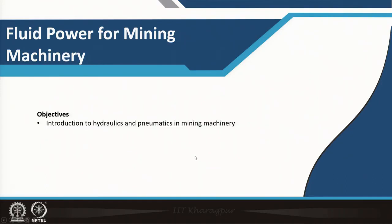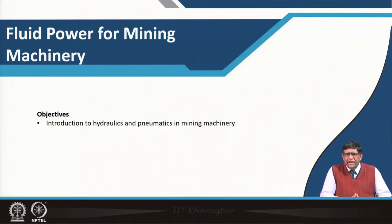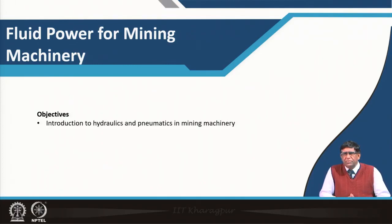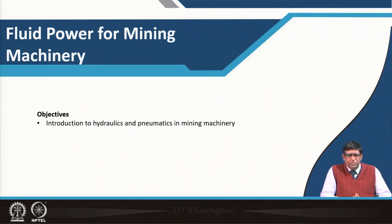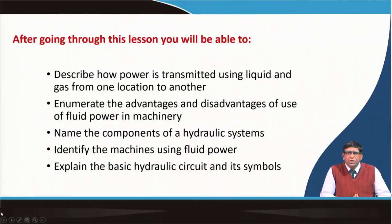Fluid refers to both liquid and gas together. In mining machinery we use mineral oil as a fluid, and also compressed air as a fluid. There are a number of machines which use compressed air — particularly in drilling machines we use compressed air, and pneumatic motors are used. In hazardous conditions, such as underground coal mines where electricity use may cause sparks and explosions, pneumatic systems were used. And hydraulics, of course, is one of the major utilizations in machines.